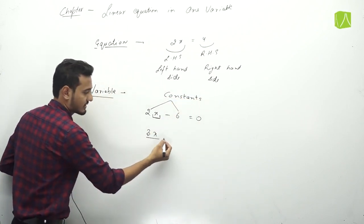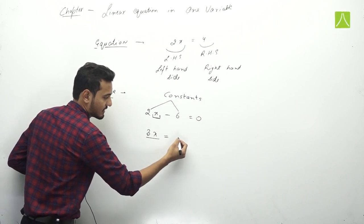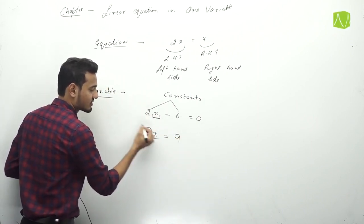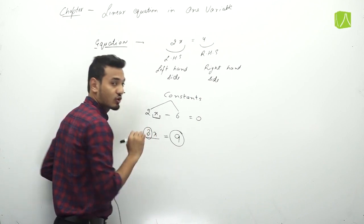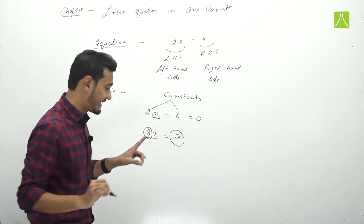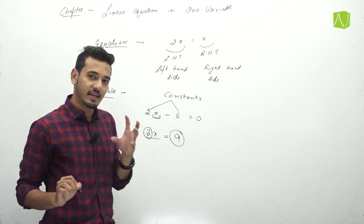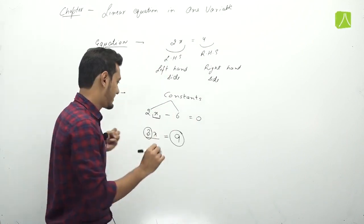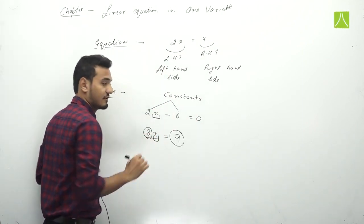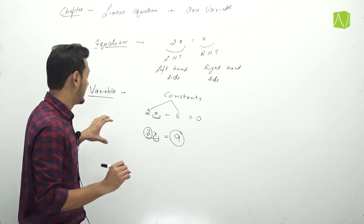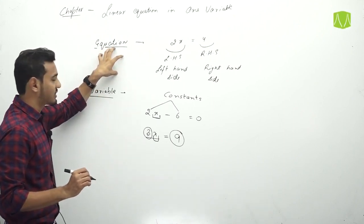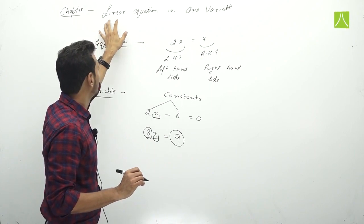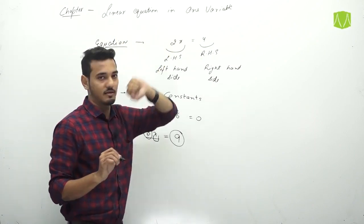In this equation, let us take 3 — 3 is constant and 9 is also constant. Now what is not constant? x. The thing which is not constant is the variable. x यहाँ पर हमारा variable है। So equation क्या होता है और variable क्या होता है — ये समझना आ गया होगा।